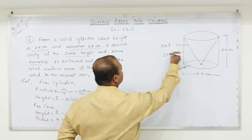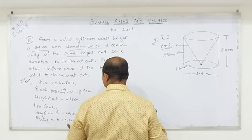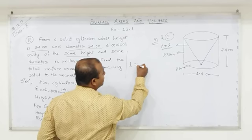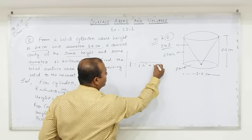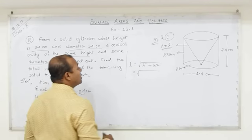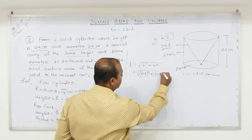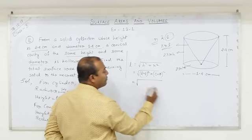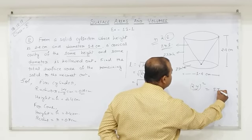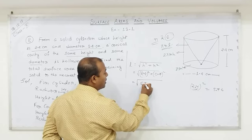For the cone's surface area we need two dimensions: radius and slant height. Radius is 0.7 cm but slant height is not given, so we have to calculate it. The formula is l = √(h² + r²). Cone height is 2.4 cm and radius is 0.7 cm. So: √(2.4² + 0.7²) = √(5.76 + 0.49).